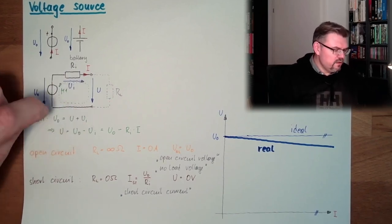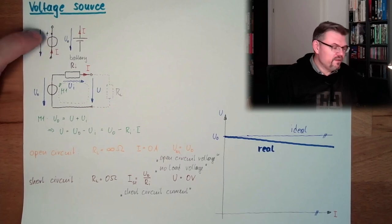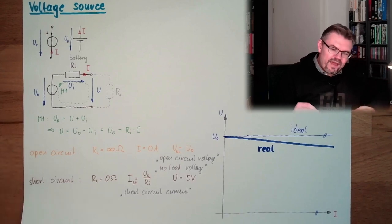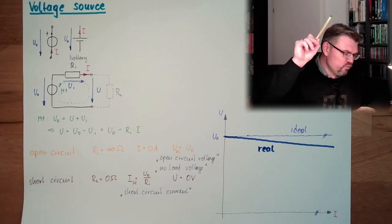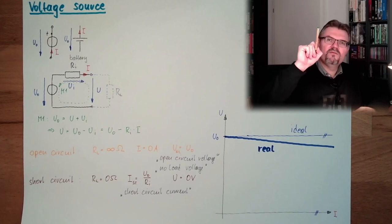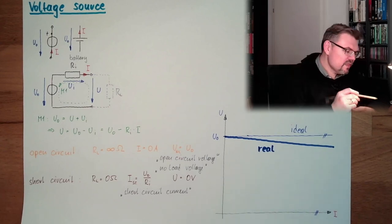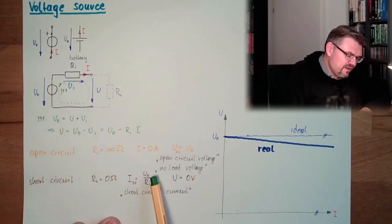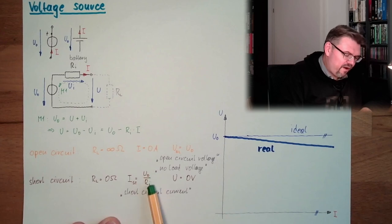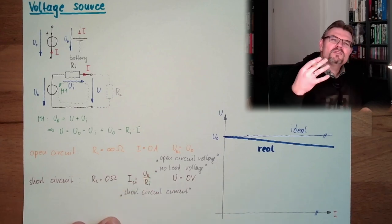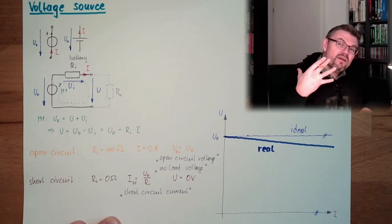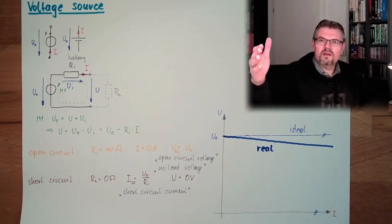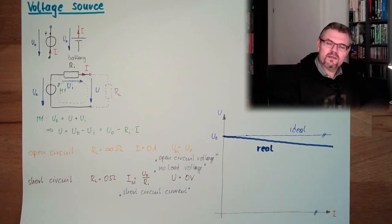What would be the ideal internal resistance of a voltage source? Look at that. This is real, this is ideal. Ideal Ri is zero. This means we tend to have this Ri as low as possible. This would most perfectly fit to the ideal voltage source. If Ri is very small, and we look at this, U0 is constant, Ri is very small, the short circuit current is usually very big, very, very big. This is why, I don't know, if you use a car battery, 12 volt lead accumulator,